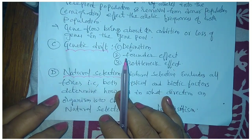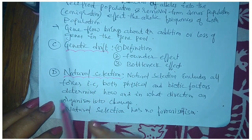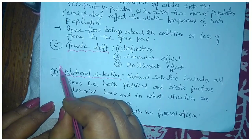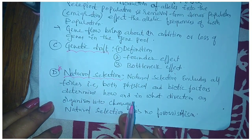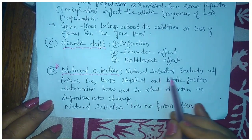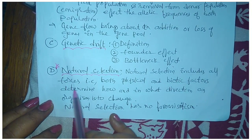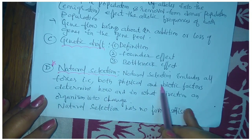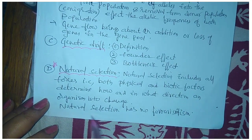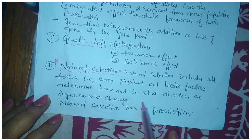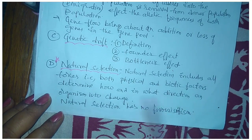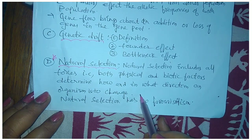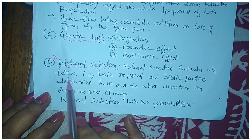The fourth and last one is natural selection. Natural selection includes all four steps — both physical and biotic factors determine how and in what direction an organism is to change in their environment. That is natural selection.